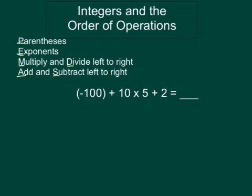So let's look at this problem: negative 100 plus 10 times 5 plus 2. We don't have any parentheses, we don't have any exponents, but we do have multiplication, and here it is right here in the middle. So we want to work that first, and we get 50.